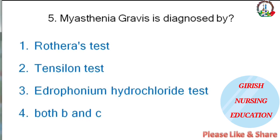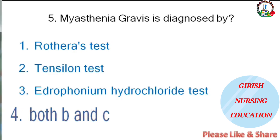Myasthenia gravis is diagnosed by — Rothera's test, tensilon test, edrophonium hydrochloride test, or both B and C. The correct answer is both tensilon test and edrophonium hydrochloride test.